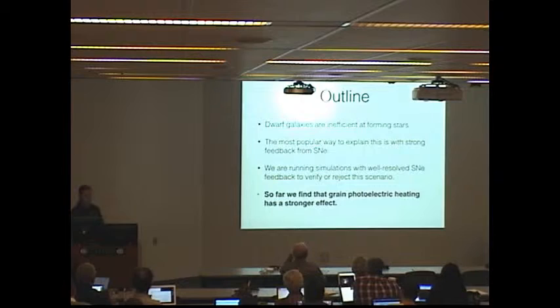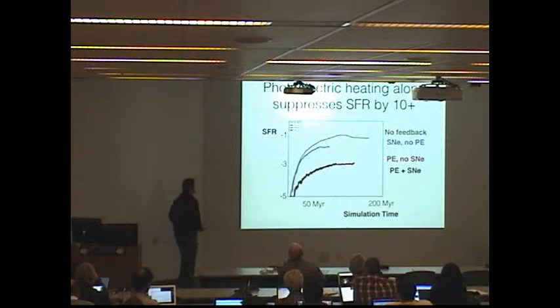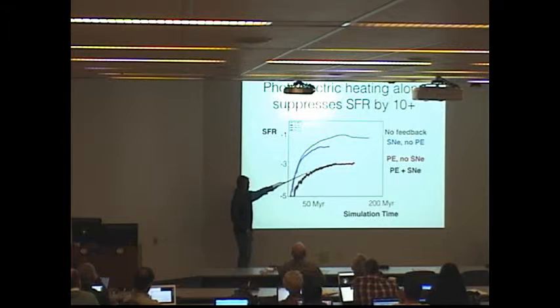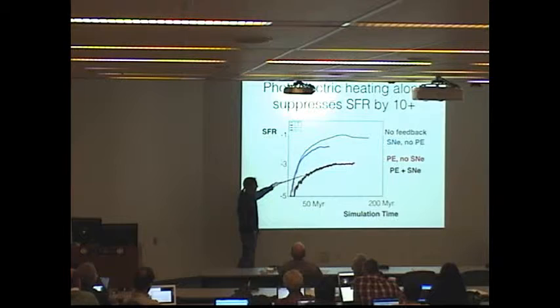Now I keep saying that we find that this has a stronger effect than supernovae. If you look at the star formation rate as a function of time in our simulations for four different scenarios—supernova on and off and photoelectric heating on and off in every combination—you see that these two lines are very different from these two lines, and the difference is the photoelectric heating. The supernovae don't do very much if you already have photoelectric heating on, and they do a little bit if you have no other feedback.